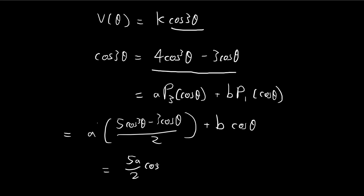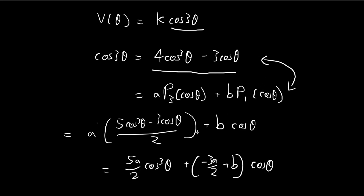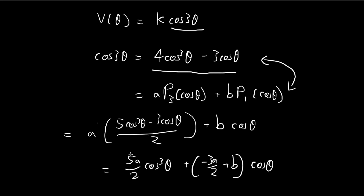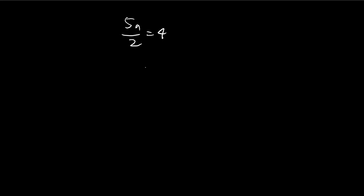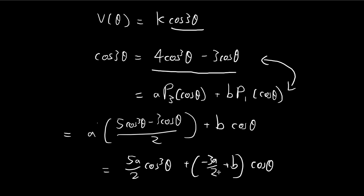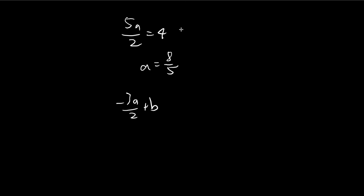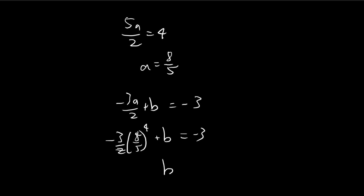Grouping the terms together and assuming both sides are equal, we can compare coefficients to find constants a and b. For the first one, we know that 5a/2 is equal to 4 by comparing coefficients, so a equals 8/5. Doing the same thing, negative 3a/2 plus b is equal to negative 3. Substituting a back in, you get 4, so b equals 12/5 minus 3, and since 3 equals 15/5, b equals negative 3/5.